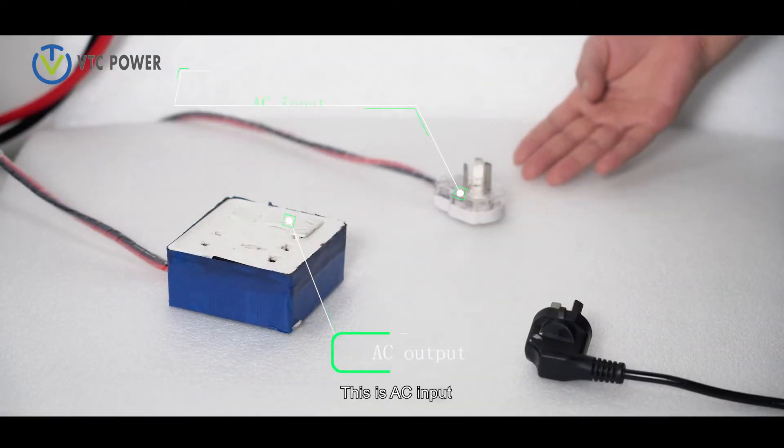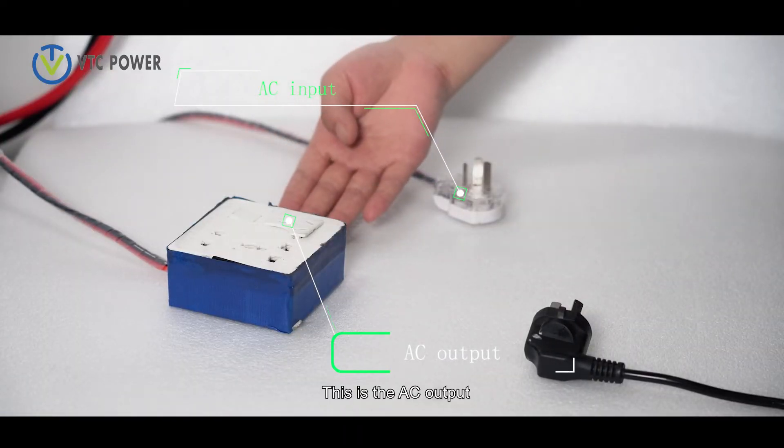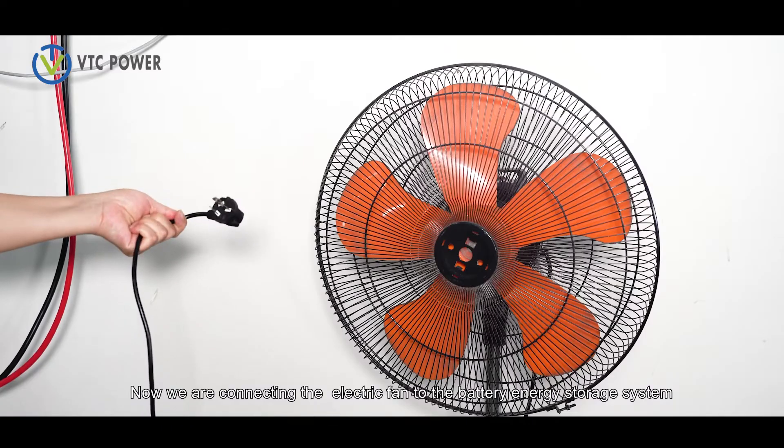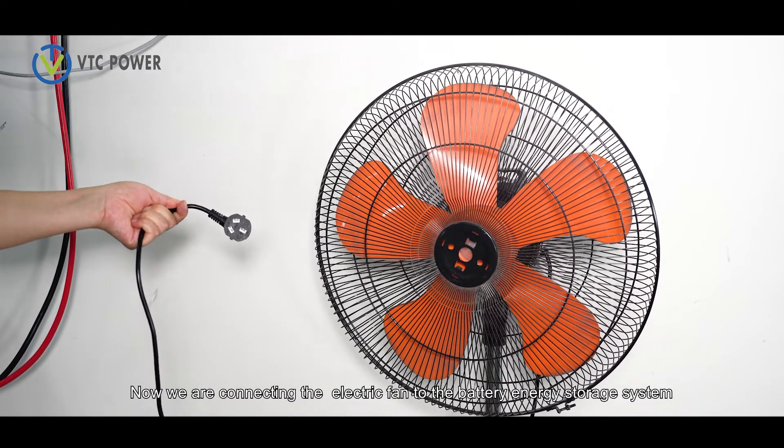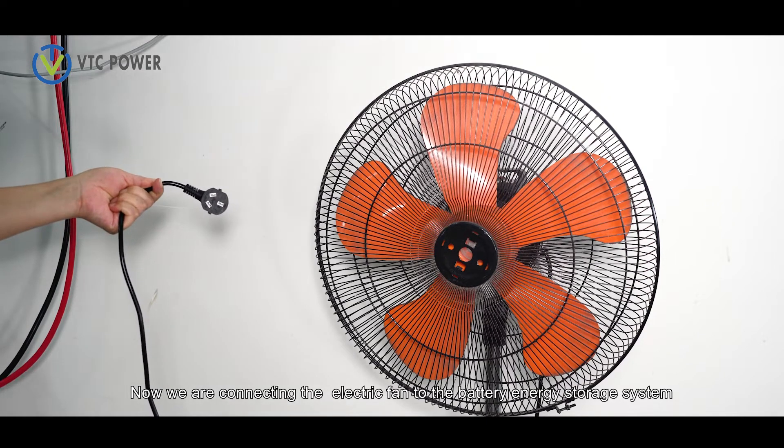This is AC input. This is the AC output. Now, we are connecting the electric fan to the battery energy storage system.